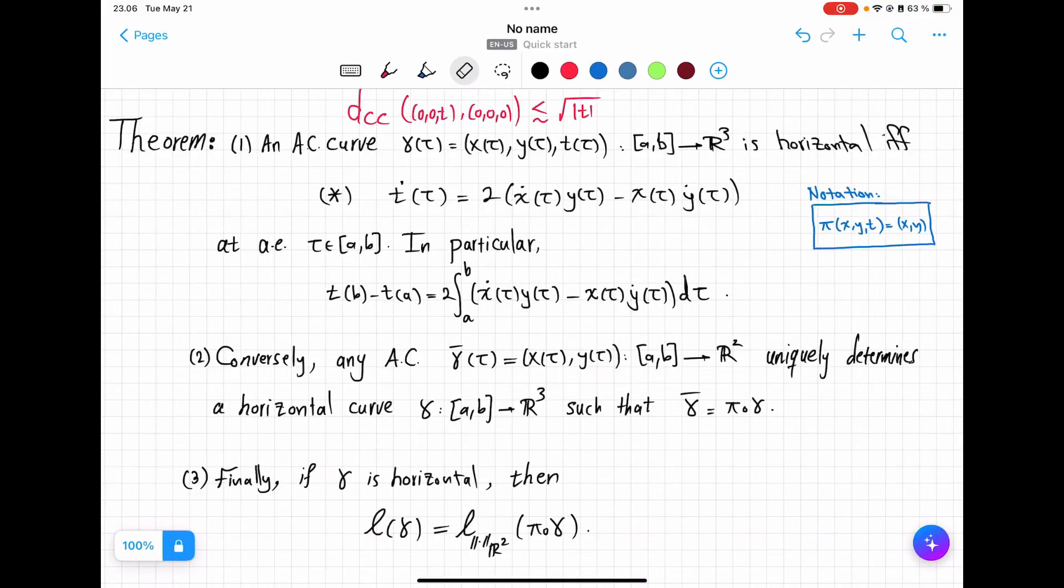Using previous results, we find another important estimate on the Carnot-Carathéodory distance in the Heisenberg group.